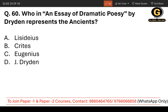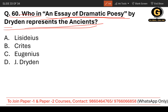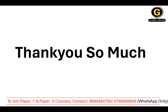Question number 60 — the last question of this lecture: In An Essay of Dramatic Poesy by Dryden, who represents the ancients? When you read the essay, there are characters — some favor the ancients, some favor the moderns, some favor the Restoration. The options are Lisideius, Crites, Eugenius, and John Dryden himself. The correct answer is Crites — option B. We have now completed this lecture. We will cover more questions in our upcoming lectures. Thank you so much, and if you have any suggestions, please comment below.